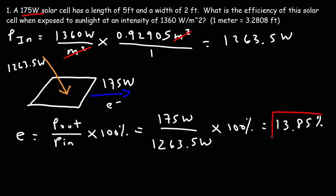There are other factors to consider, but that's how you can calculate the efficiency of a solar cell in a simplistic way. We simply take the output power being converted into electricity and divide it by the input power coming from the sun, based on the area of that solar cell.